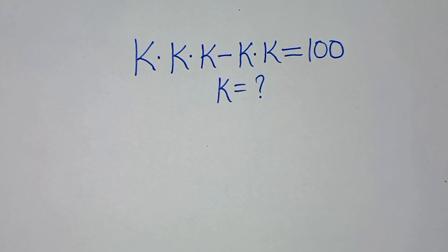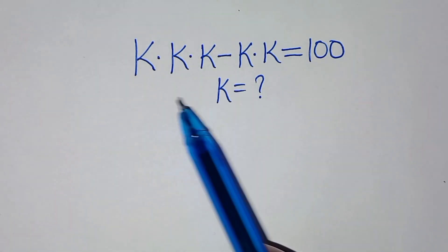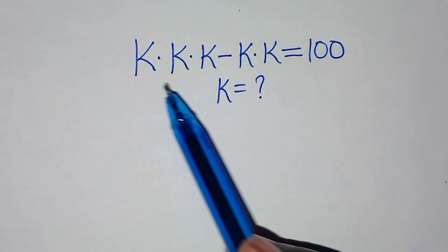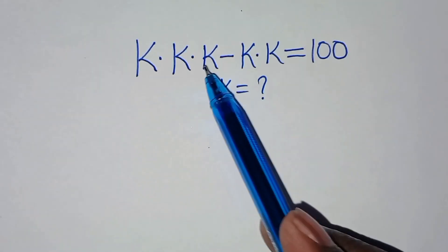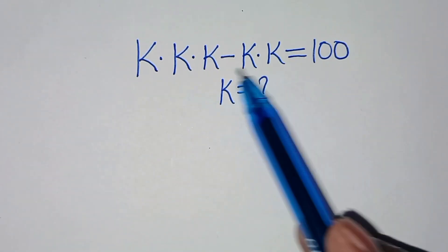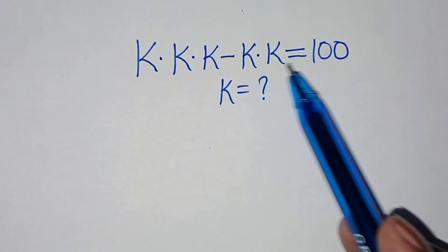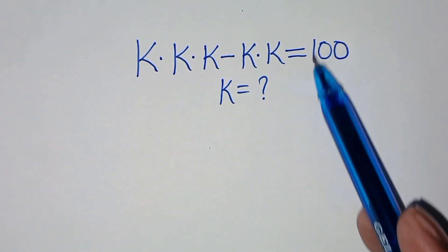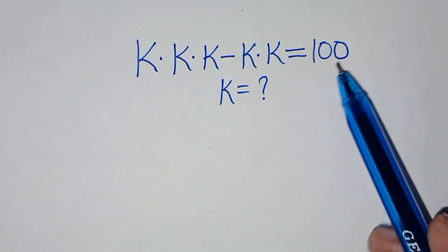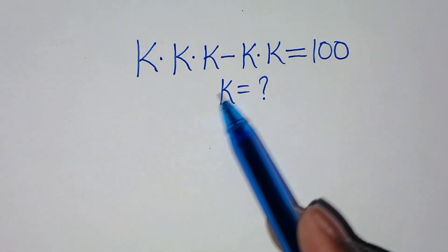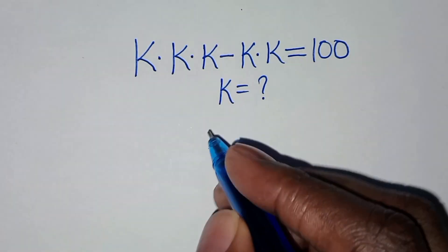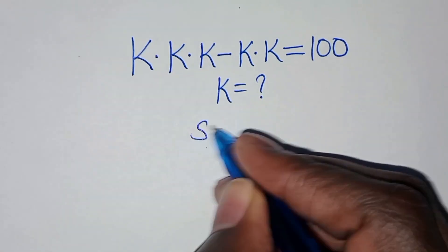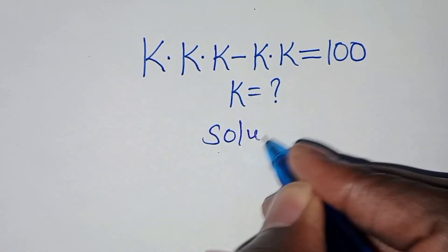Hello everyone, welcome to solve this nice algebra problem: k times k times k minus k times k equals 100. What is the value of k?